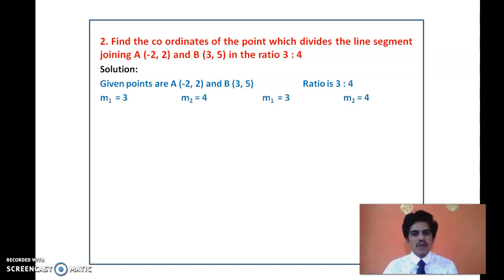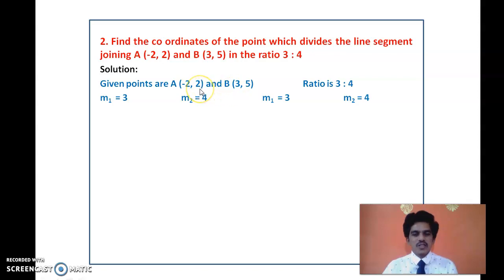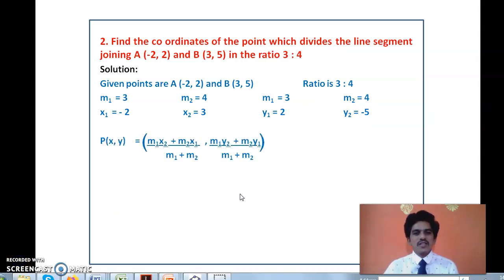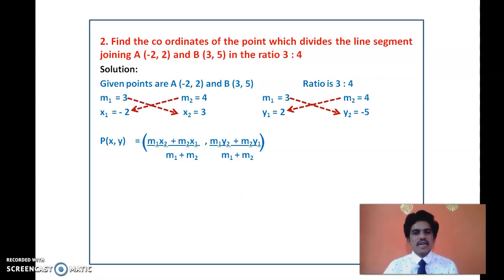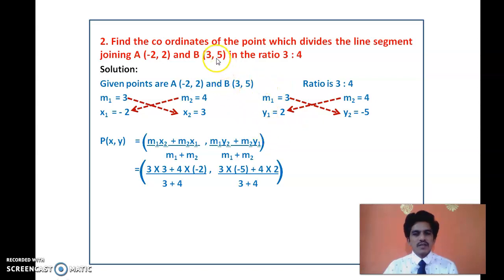Write M1 = 3, M2 = 4 twice. For the first pair: x1 = -2, x2 = 3. For the second pair: y1 = 2, y2 = -5. Note: B is (3, -5) — there was a typing error showing 5 instead of -5, so please correct that. Substituting: x = (3×3 + 4×(-2)) / (3 + 4), and y = (3×(-5) + 4×2) / (3 + 4).